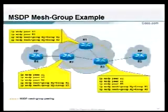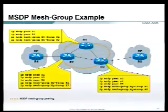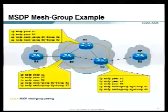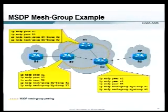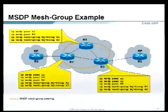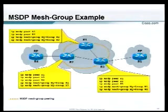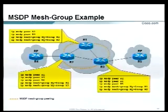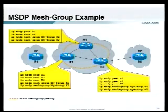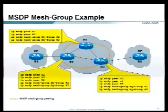The motivation for mesh groups is simple: cutting down SA flooding. If you had 50 MSDP peers and one received an SA, it would send to all 50 peers, who'd each send to all their peers — it's a scaling problem. Mesh groups also play a role in anycast RPs, which we'll discuss shortly.